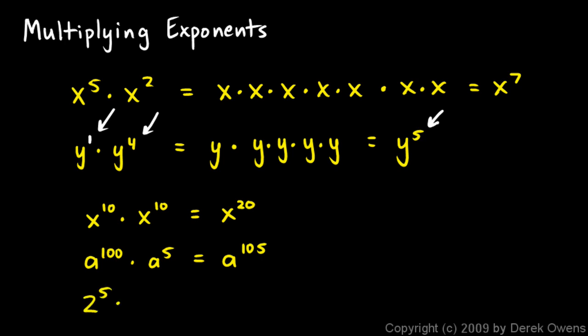The base doesn't have to be a variable — it can be a number. 2 to the 5th times 2 cubed will be 2 to the 8th. And 2 to the 8th is 2 times 2 times 2 times 2 times 2 times 2 times 2 times 2, which works out to 256.